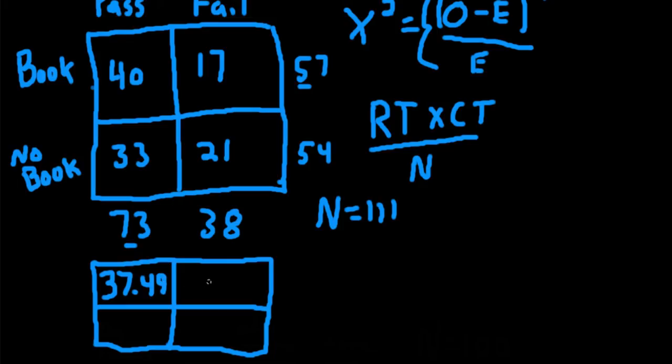And then we'll do the same thing for the next cell. We'll take 57 times 38, and divide it by 111. And we'll get 19.51.